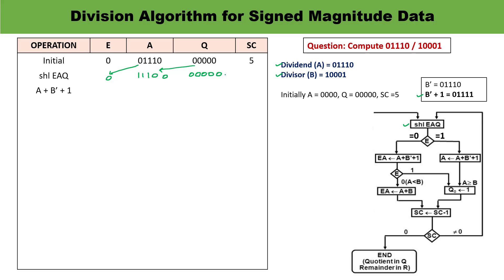Now check the value of E — it is 0. Since E is 0, we perform A plus B̄+1. B̄+1 is 01111. Adding gives a result of 101110 with carry. The carry generates E=1, which means we set Q0 to 1, so Q becomes 0001.